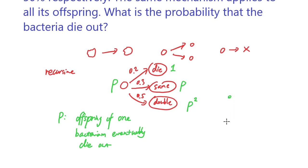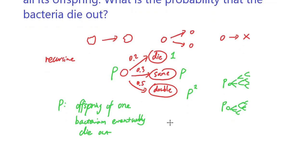You can think of it as two bacteria that might eventually die out with some probability. They are independent of each other, and both have a probability of dying out eventually which is p — the same as the very first bacterium we started with. So for both of them to die out, this would be p squared. Now we have a recursive relationship: p equals 0.2 times 1, plus 0.3 times p, plus 0.5 times p squared.